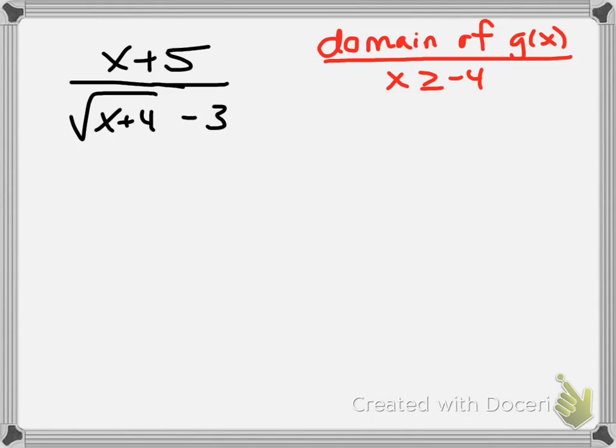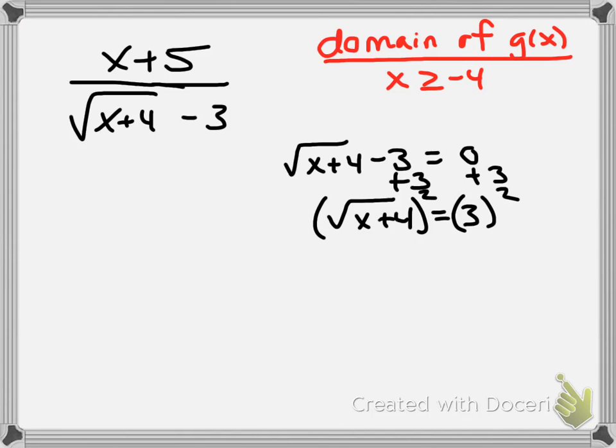So let's start with the denominator as a whole. Since it has a variable, I'm going to set the denominator equal to 0 and I solve for x. In this case, I'd add 3. So the square root of x plus 4 equals 3. I'll take this, I'll square both sides. So x plus 4 equals 9, and by subtracting 4, I find that x is equal to 5.